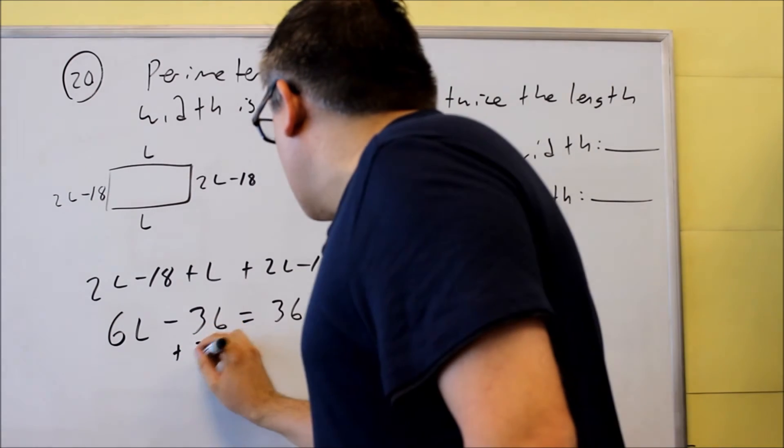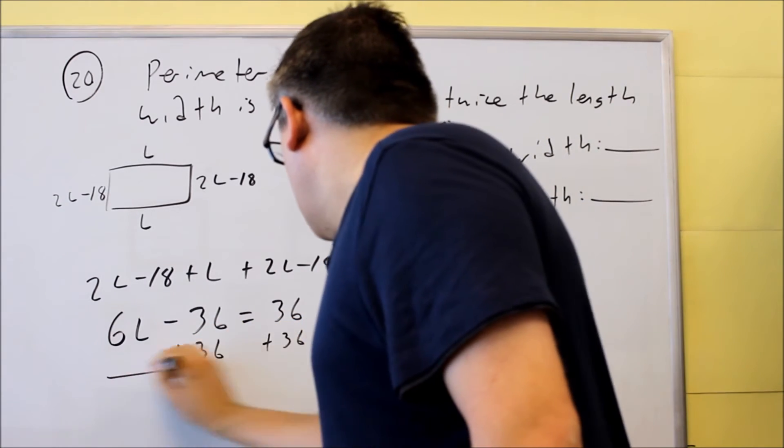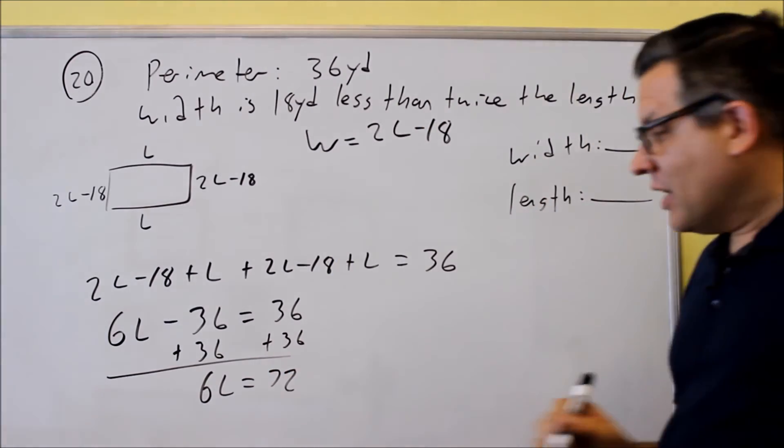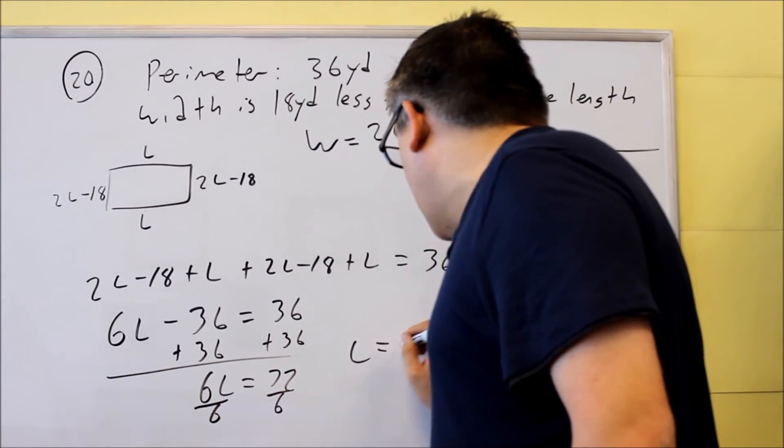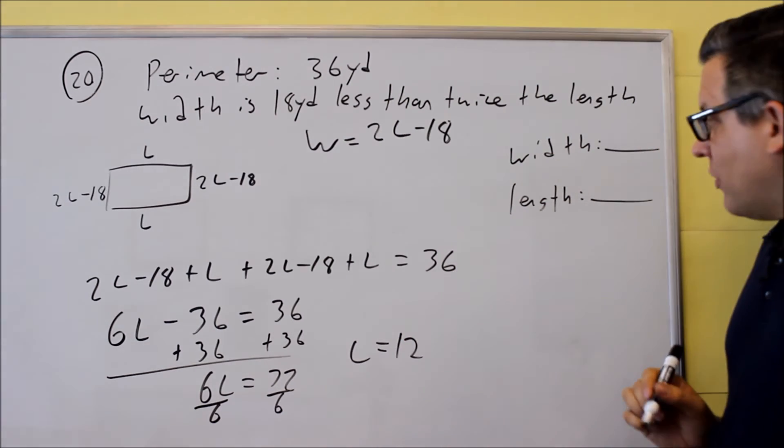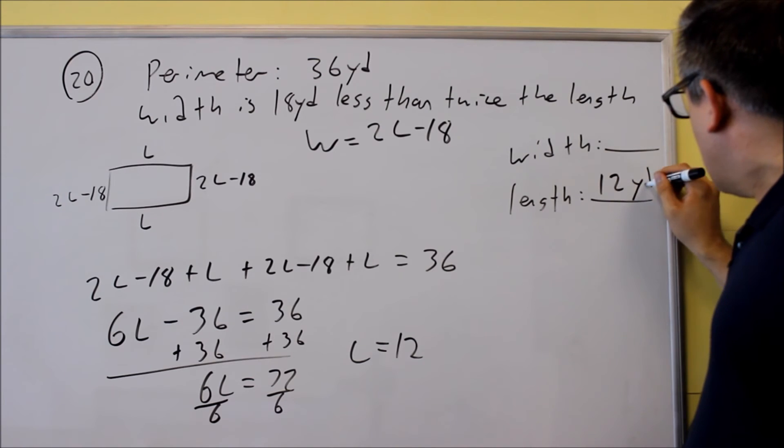I'm going to add 36 to both sides, and I get 6L equals 72. Divide both sides by 6. The length is 12. Let's put that here, 12 yards.